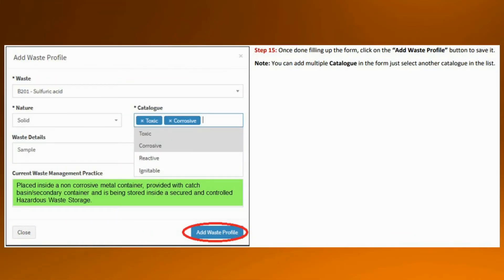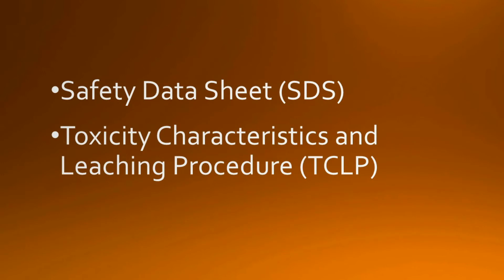In case you are wondering how to determine the information needed in this part, you can always refer to the characteristics of the particular waste on its Safety Data Sheet. Just be sure that the SDS you will be using as reference is reliable. If SDS is not available, you can use other reliable references such as websites, consultants, or even EMB personnel. However, if you really want to ensure the classification of the waste generated is accurate, you can avail the service of TCLP — the Toxicity Characteristics and Leaching Procedure. Please be warned that this procedure is expensive.